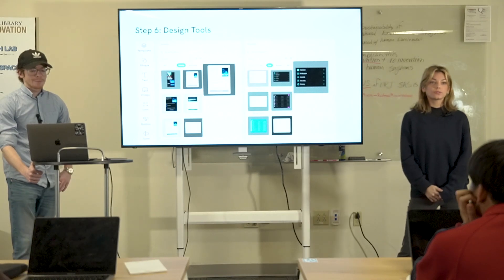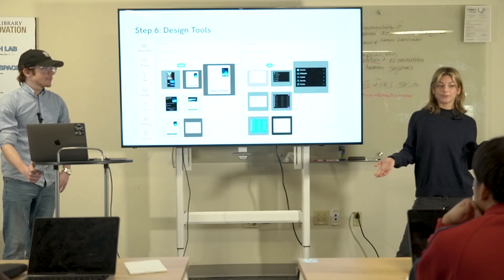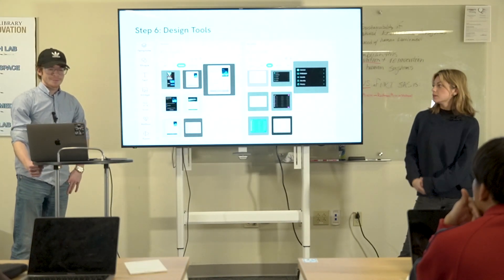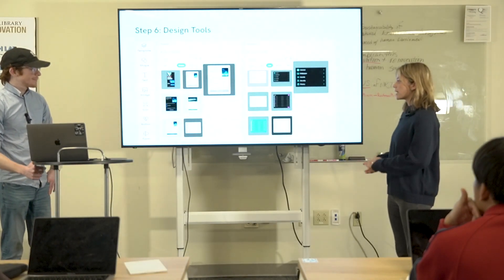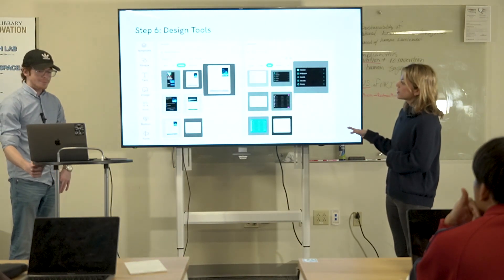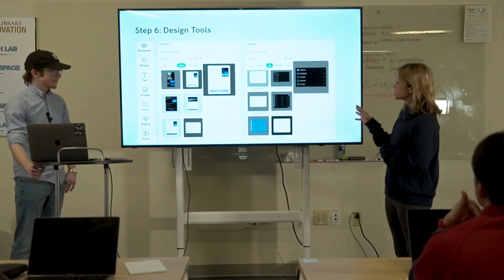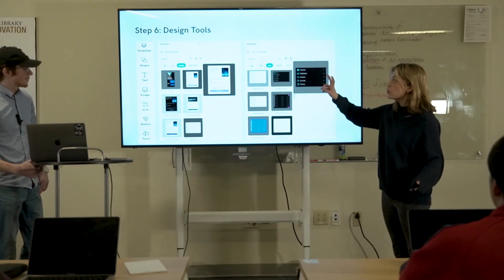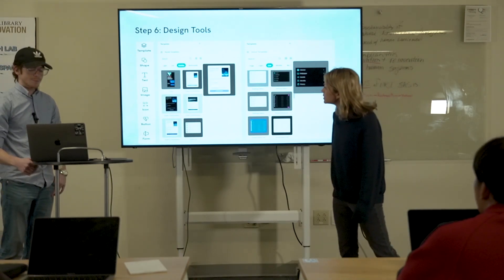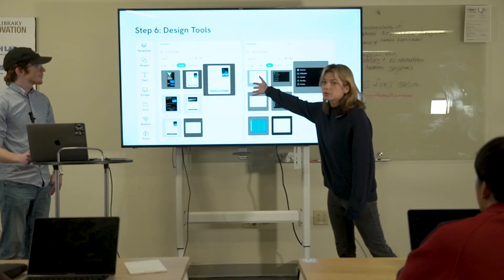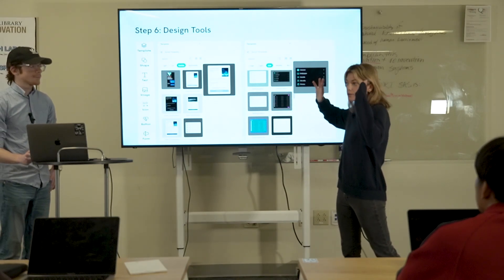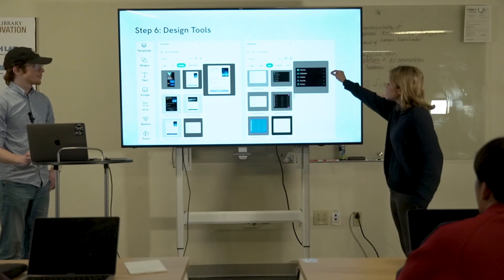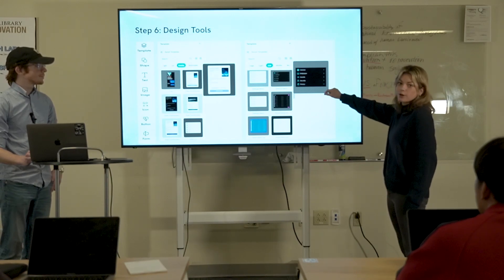My favorite tools, other than the screen generator, are the design tools because there are so many. They have buttons, icons, images, text, and shapes. Within the shape function, there's a million different options — here we have options for a mobile app. You can see an order confirmation screen already built for you, so you can modify it with colors and descriptions. Same thing with lists, so you don't have to drag and drop each element — it's already there.